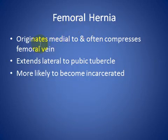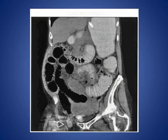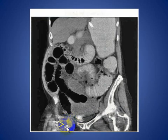Femoral hernia originates medial and often compresses the femoral vein, extends lateral to the pubic tubercle, and is more likely to become incarcerated. As we see here in this coronal CT scan image, there is a soft tissue mass — an incarcerated femoral hernia with proximal bowel obstruction.